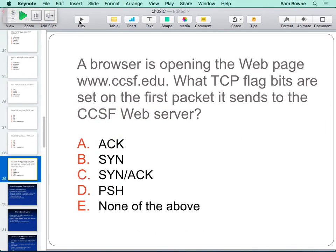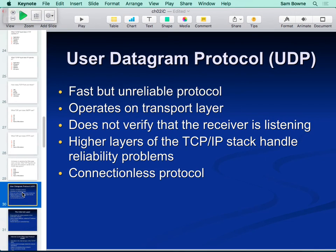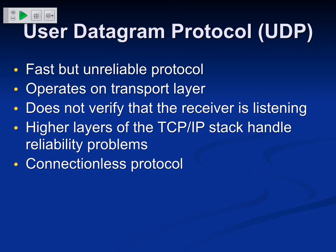That was TCP. TCP is what you use for the vast majority of transmissions because if you're sending something you want to make sure it really got there. However, sometimes you don't want that - TCP is slow because you have to wait for all those acknowledgments. You might have something like a security camera monitoring a parking lot and you want it to just keep sending data at full speed all the time.